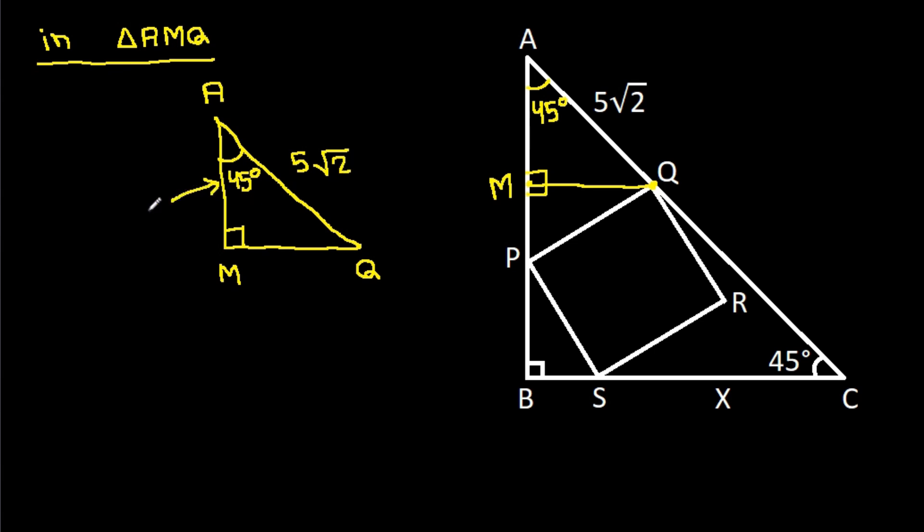So AM will be AQ cosine 45 degrees, and it is 5 root 2 times 1 over root 2, that will be 5. So we get AM is 5 and MQ is 5.